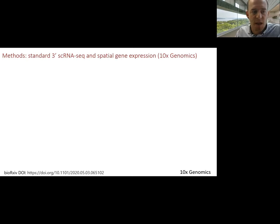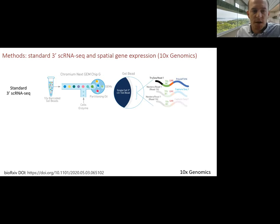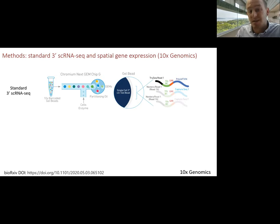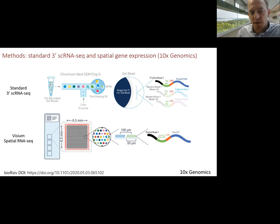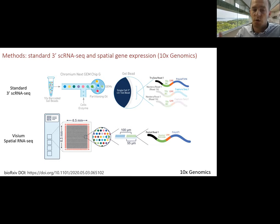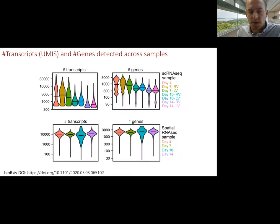The methods include three-prime single cell RNA sequencing using the Chromium platform, where messenger RNAs are captured using poly-T oligos that are barcoded, enabling single cell gene expression measurements. We also used the Visium platform, which does something similar but with oligos attached to specific locations on a microscope slide — you place a piece of tissue on the slide and messenger RNAs are locally captured by these oligos, connecting gene expression with spatial location. We performed this analysis for four different time points to look at temporal changes.